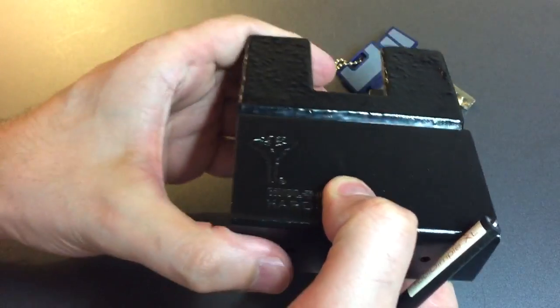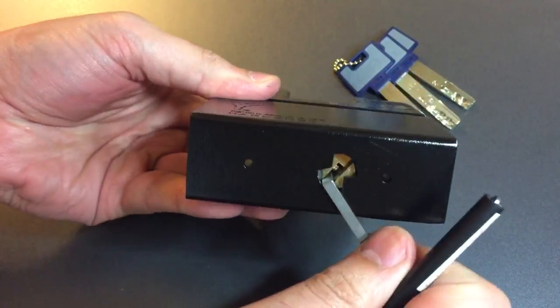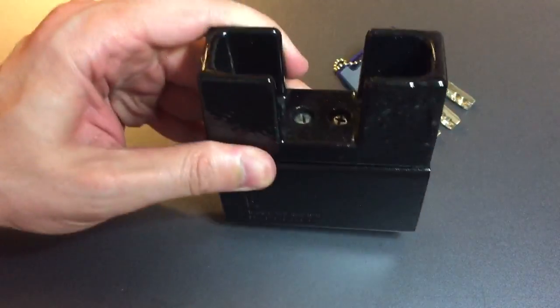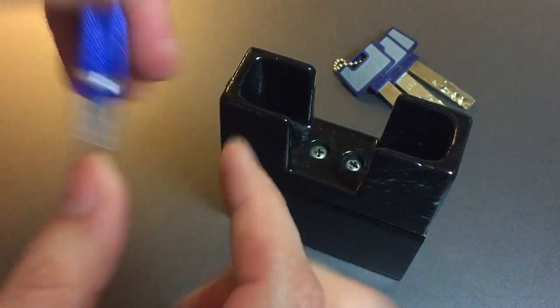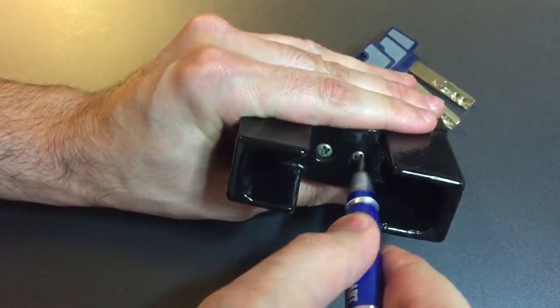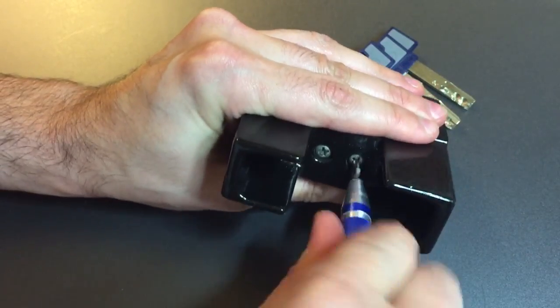I think I permanently hurt my wrist doing that. Let's take this beast of a lock apart now. We're going to start off with a Phillips screwdriver to remove this shackle guard. We have two screws right on the top.